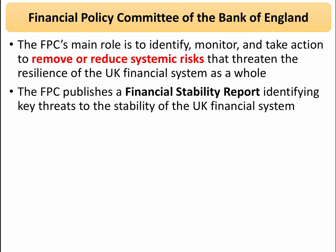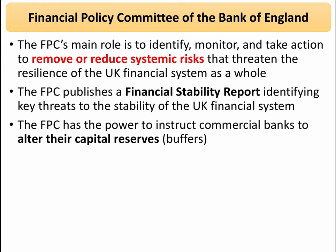They publish a financial stability report available on the Bank of England's website, which looks at all the key threats to the stability of the banking system. That could be domestic risks — for example, a severe fall in house prices — or external risks, such as fragility in the European banking system, the impact on UK banks of a financial crisis in China, exchange rate volatility, or the consequences of the Brexit vote and subsequent negotiations. They have the power to instruct commercial banks — such as Lloyd's, RBS, and Barclays — to change their capital reserves.